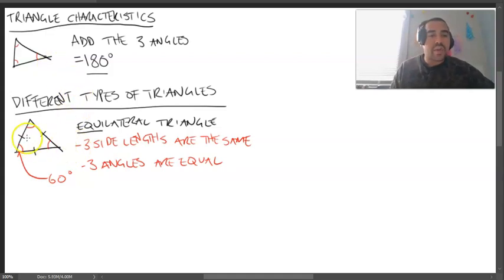Because think about it this way, if we were to get 180 and split this into three parts, the only answer you can get is 60. Now this is only for equilateral triangles. So, equilateral triangle is your first triangle.